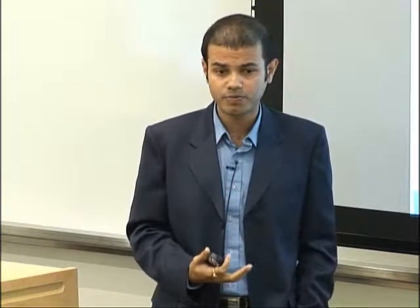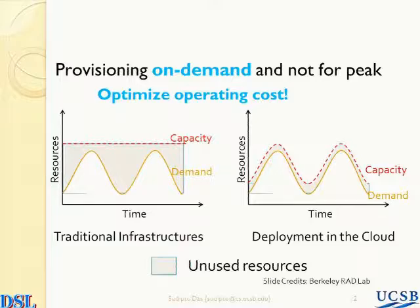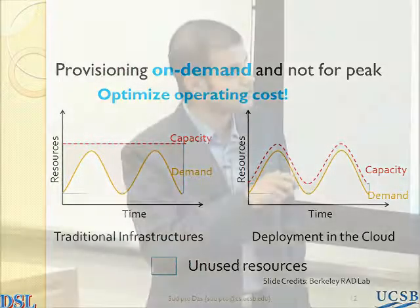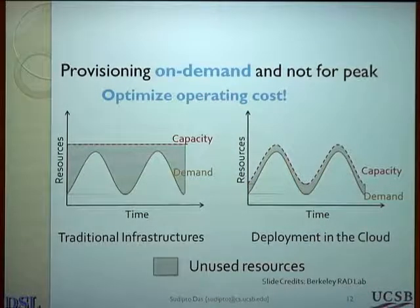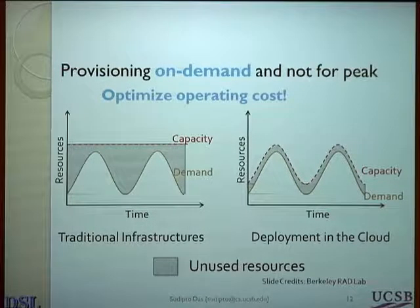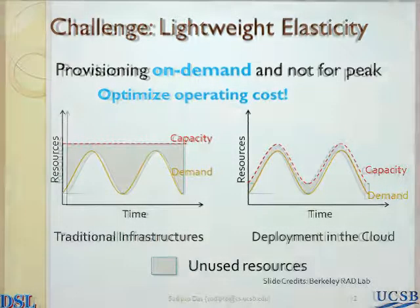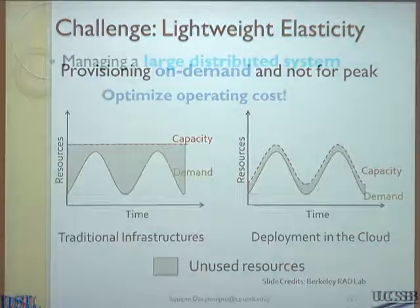This becomes even more critical for cloud platforms that often cater to a wide variety of applications. Elasticity is a key thing in cloud. Compared to the classical enterprise setting where you have statically allocated capacity, cloud allows you to provision your systems on demand. We want the database systems to have this ability as well — to be elastic and lightweight in terms of providing elasticity by not introducing a lot of overhead.